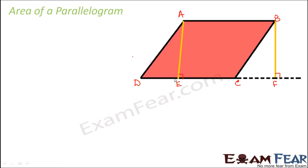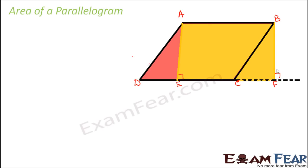Now how is the area of the parallelogram ABCD related to the area of the rectangle ABFE? If you observe very closely, you would see that the area of this rectangle is actually equal to the area of the parallelogram. How? Because when we draw this rectangle we are excluding this triangle on one side, but at the same time we are including this triangle on the other side.